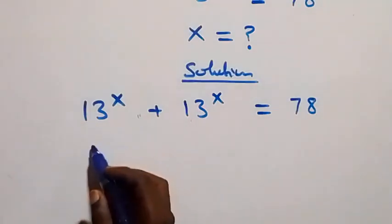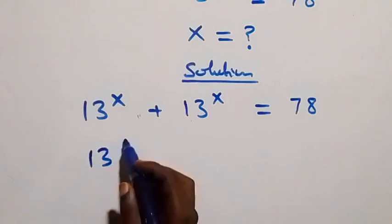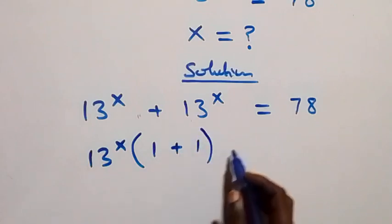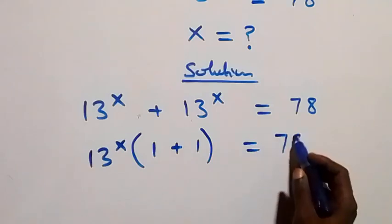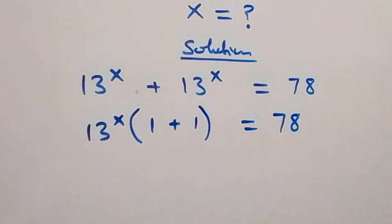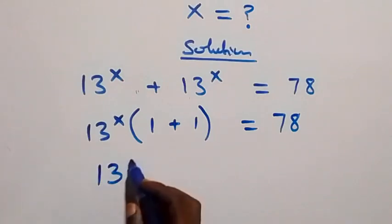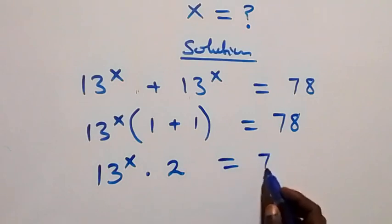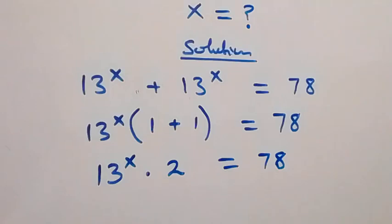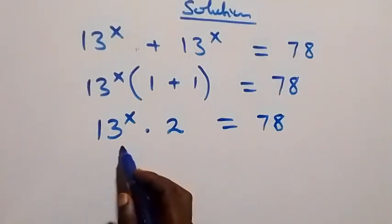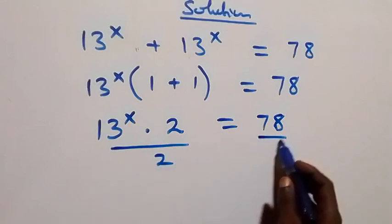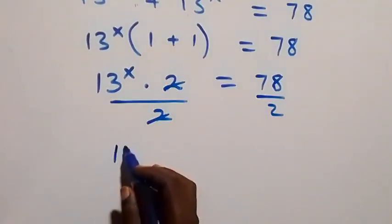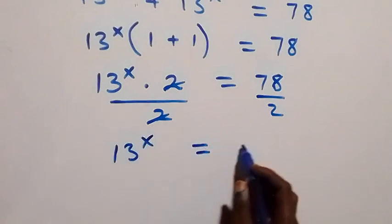Here we can solve this way: 13 raised to power x is factored out, and we have one plus one left inside, equals 78. So this is 13 raised to power x times one plus one, which gives two, equals 78. From here, the next step is to divide both sides by two — the two cancels — and we have 13 raised to power x equals 39.